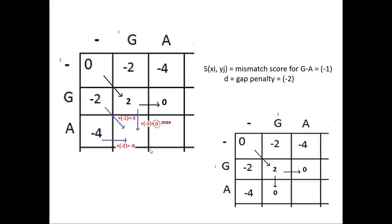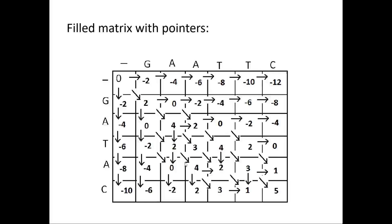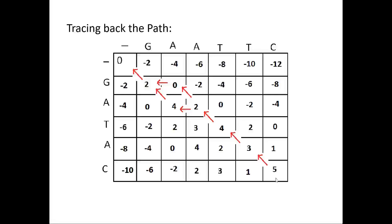Similarly, other boxes are filled in this way. There can be instances where you get the maximum value from two boxes, so a pointer is placed from both boxes. It is also possible to get the same maximum value from all three boxes, in which case pointers are placed accordingly. This matrix is now fully filled. The next step is to trace back the path from the last box, following the pointers. To make it easier, the arrows are kept in the opposite direction so the path can be traced back to see from where each value was obtained.